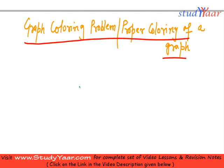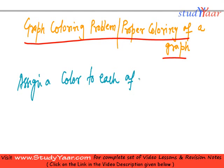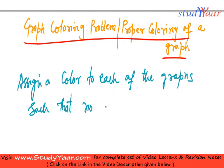Now let's look at what is a graph coloring problem, also known as a proper coloring of a graph. The problem is we have to assign a color to each vertex of the graph such that no two adjacent vertices have the same color.